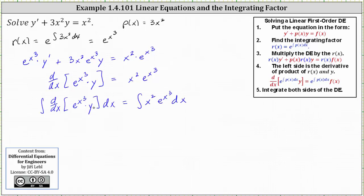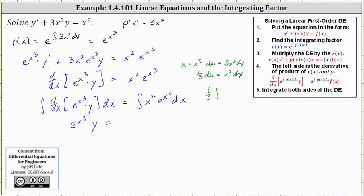On the left, the integral undoes the derivative and we're left with the integrating factor times y. On the right, we need to perform u substitution where u equals x cubed, so du equals 3x squared dx. Dividing both sides by 3, we have one third du equals x squared dx. This gives us an integral of e to the u.